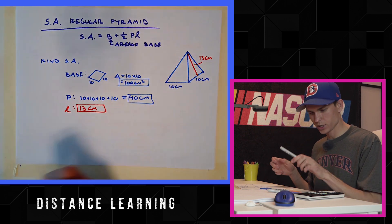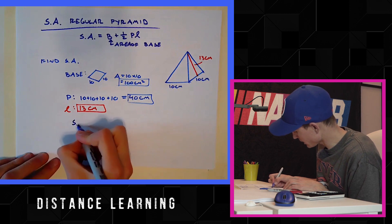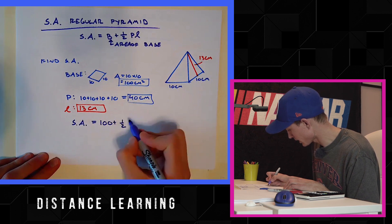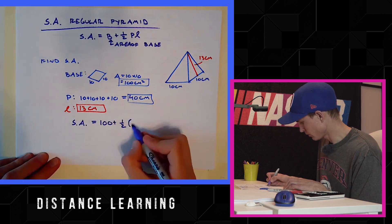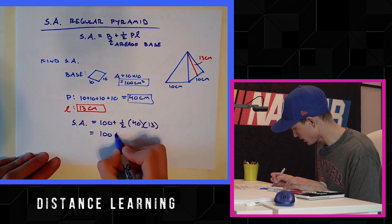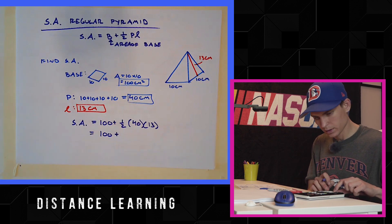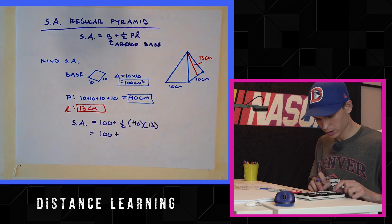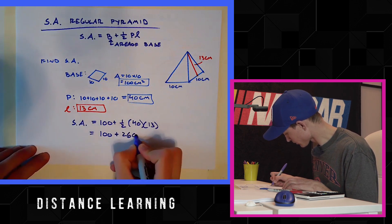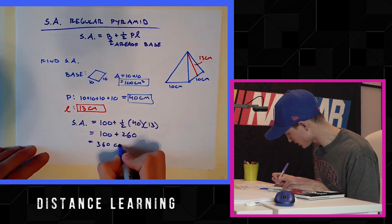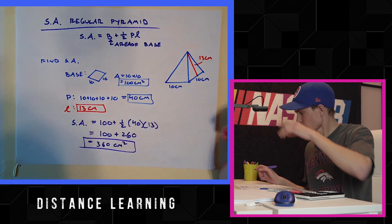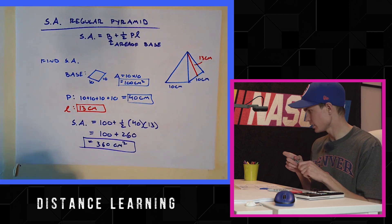Sweet. Plug and chug, baby. Surface area is area base 100 plus one half perimeter 40 times slant height 13. That means it is 100 plus, I think I left this calculator in the rain too long the other day. My bad. 260. 100 plus 260 is 360. 360 units, centimeters squared. I'm not going to put, yo, that one isn't too bad. So that is how you find the area of the pyramid.